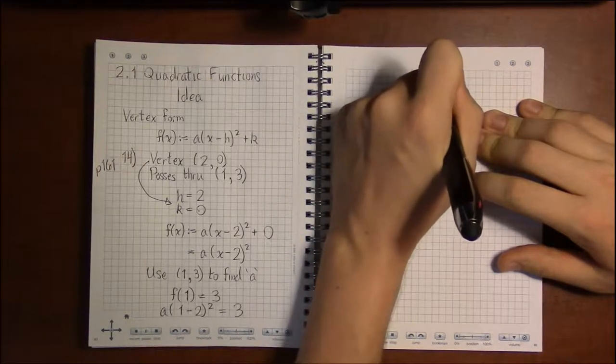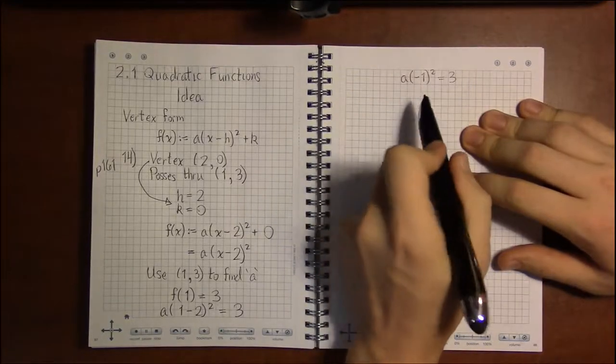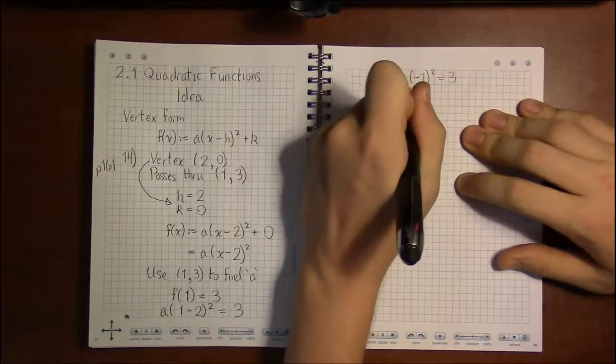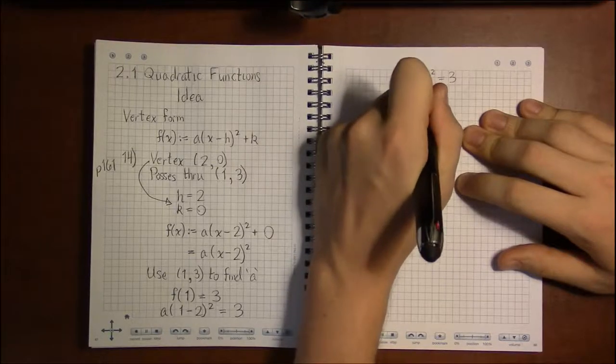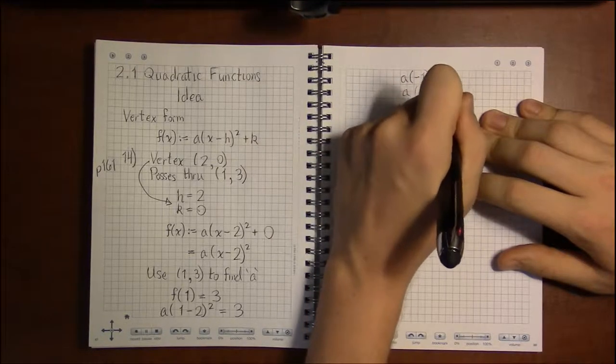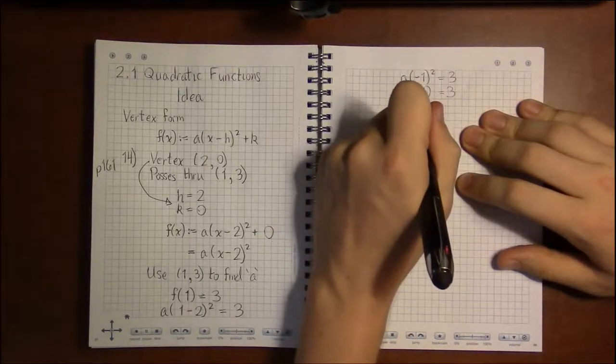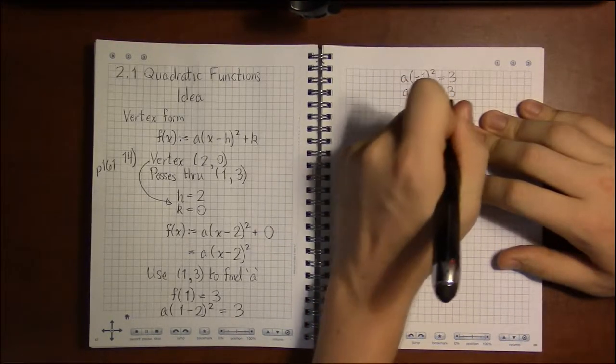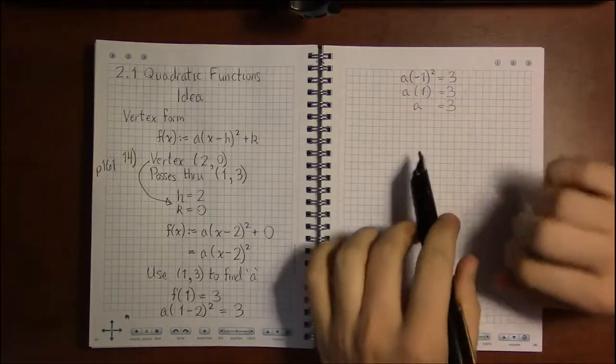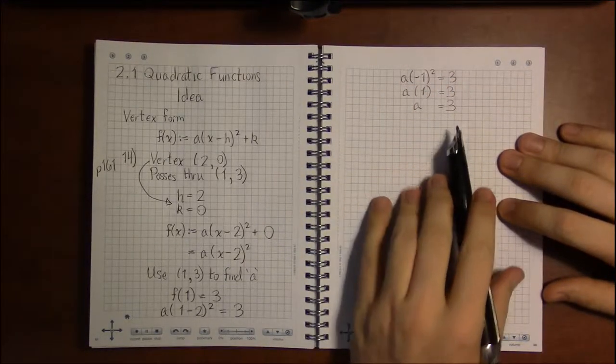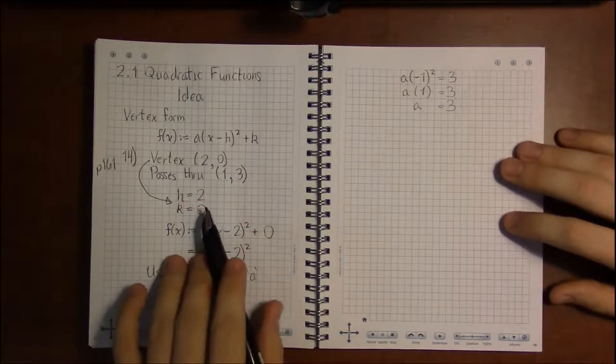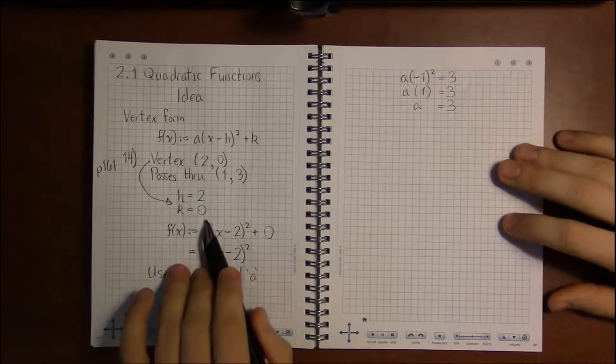Then we're going to square that, and squaring -1 just gives us 1, or +1, and a times 1 is just a. So we figured out that a is 3.